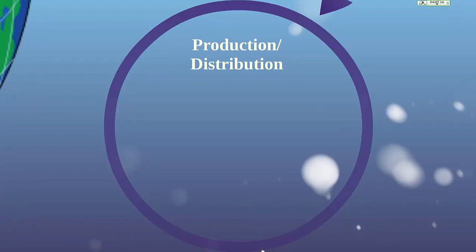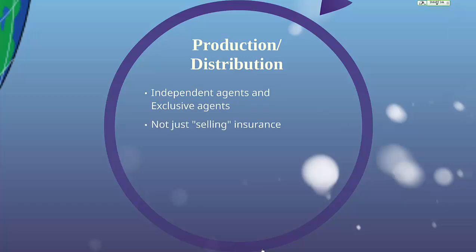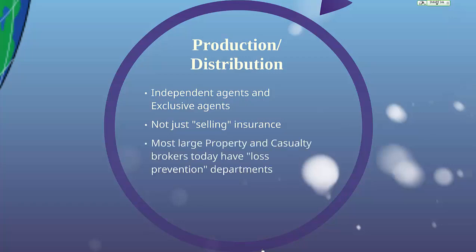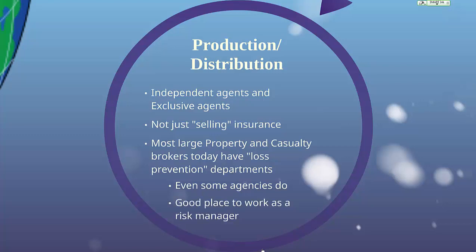Next, production and distribution — really the marketing function, the intermediary that brings the company and insureds together — includes independent agents and exclusive agents. Realize that these professionals are not just selling insurance. In fact, most large property and casualty brokers today have loss prevention or loss control departments where they actually go in and help their insureds manage risk to reduce total loss experience. I think it will become more and more common for agencies to engage in loss prevention as an expected service. If you have a desire to work as a risk manager, large brokerages are a good place to start.